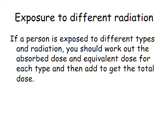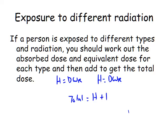If a person is exposed to different types of radiation, you should work out the equivalent dose for each type separately and then add them up. So you calculate H equals D times W_R for the first type, and H equals D times W_R for the second type, then add them together. The total equivalent dose is H from the first type plus H from the second type, giving you a total in milli- or microsieverts.